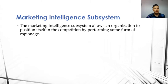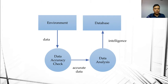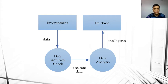The marketing intelligence subsystem allows an organization to position itself in the competition by performing some espionage. As shown in the figure, it all starts with data collection. Buying and studying a sample of a competitor's product, visiting outlets used by competitors as distribution channels to note prices, and attending product launchings are among the many activities carried out to collect data from the environment.